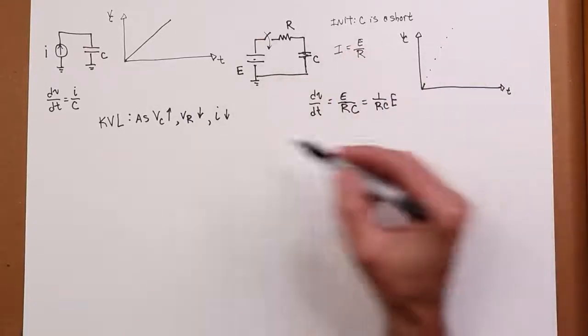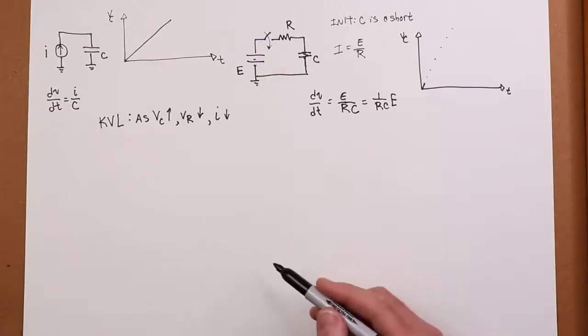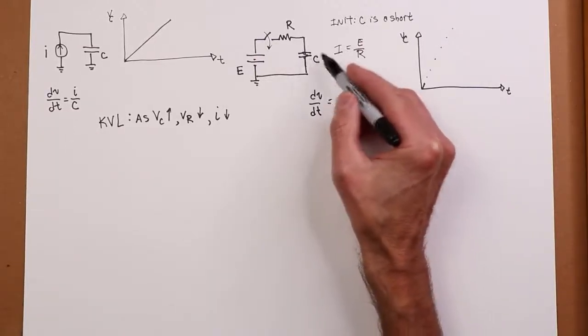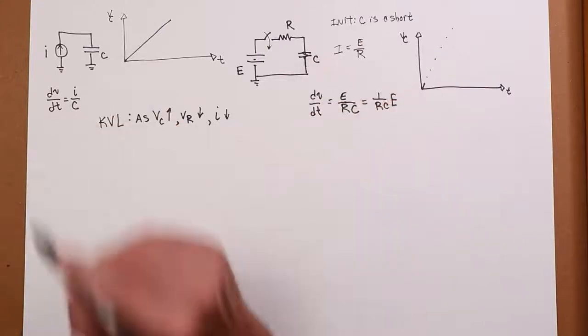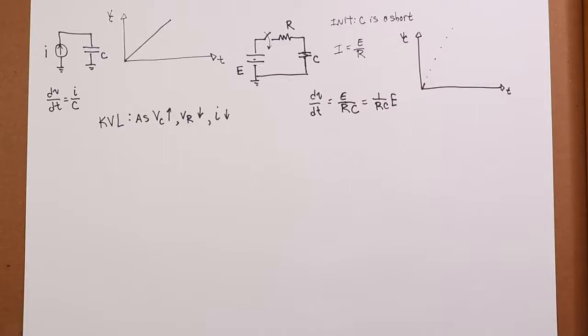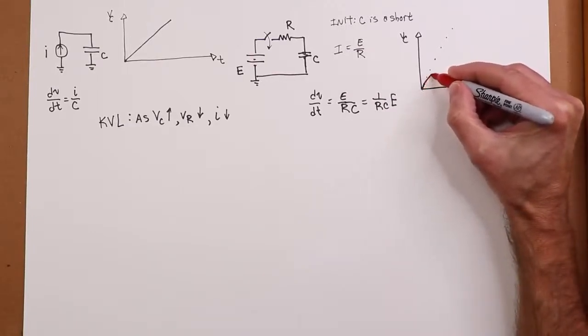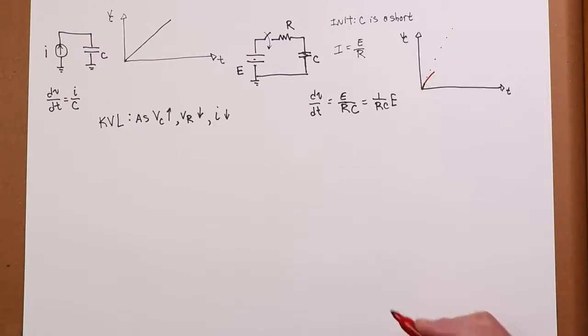Well, what's the impact of that? Less current means slower rate of change. That's the same value of capacitance, but it's a smaller current. So this thing starts to peel off. In other words, it starts to slow down.